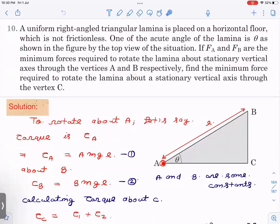About A, when you fix this A and there's a vertical axis, when you want to rotate this lamina about this, then minimum force required is FA. And the same thing when you do about B, then minimum force required is FB. Then what we have to find out? We have to find out the minimum force required to rotate the lamina about the stationary vertical axis passing through vertex C.